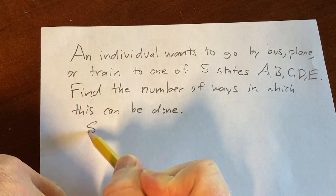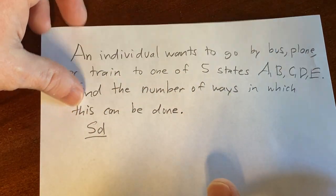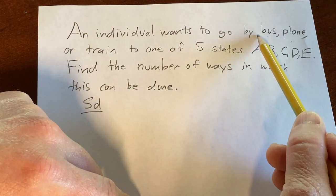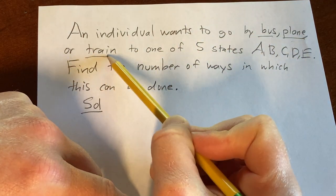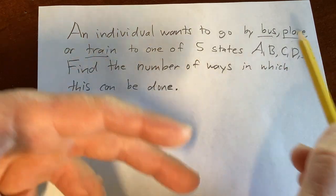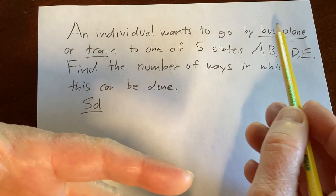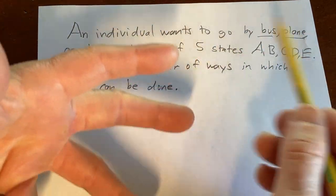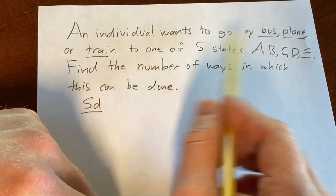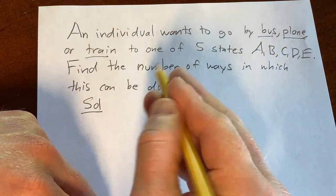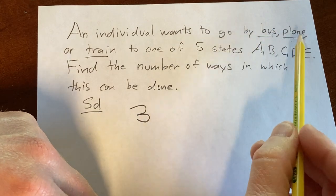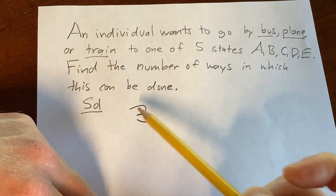Let's go ahead and work through it carefully. We can do it a couple different ways. We can first decide on the mode of transportation — in this case we have three choices: bus, plane, or train — and then pick the state. Or first decide which state we're going to and then decide which mode of transportation to take. So there are three ways to pick a mode of transportation.